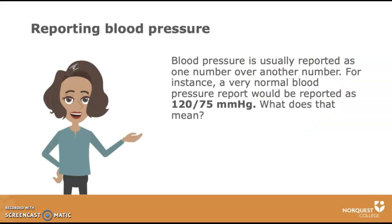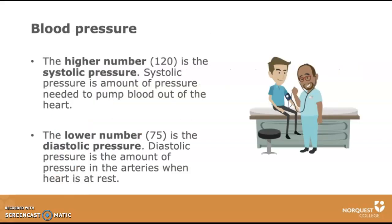Blood pressure is usually reported as one number over another number. For instance, a very normal blood pressure would be reported as 120 over 75 mmHg. The higher number, 120, is the systolic pressure.